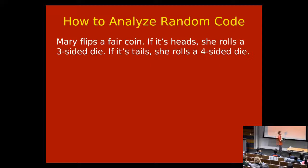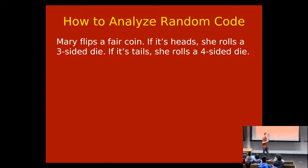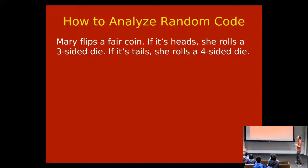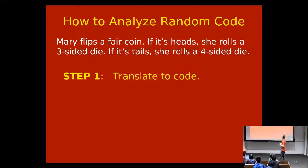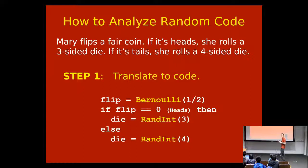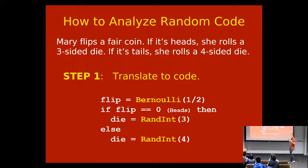Let's talk about how to analyze random code — experiments. Consider this: Mary flips a fair coin. If it's heads, she rolls a three-sided die; if it's tails, she rolls a four-sided die. The first step is to translate from English into code: flip = Bernoulli(0.5); if flip is 0, die = Randint(3); else die = Randint(4). Going from the English to code is natural language understanding; once we get to code, everything is mathematics.